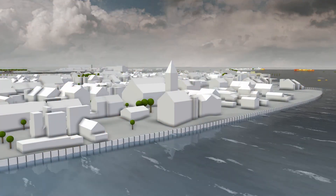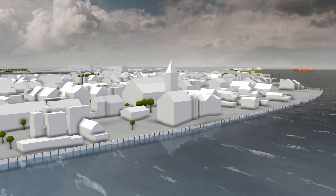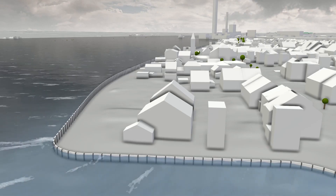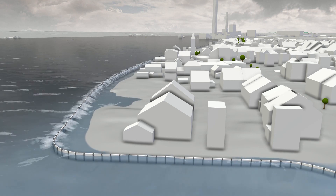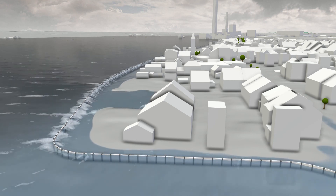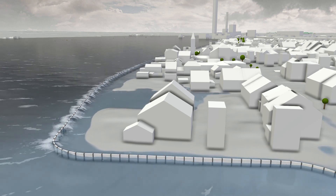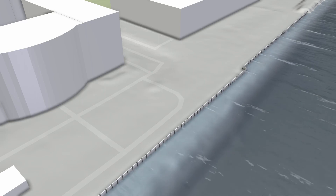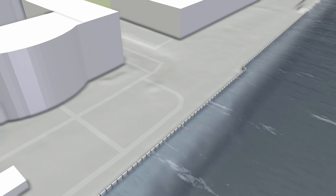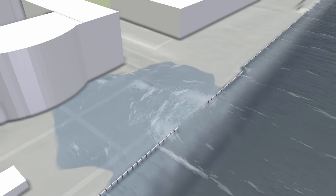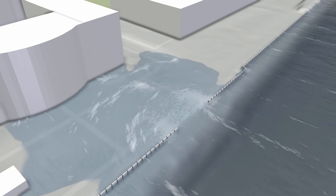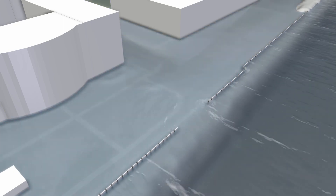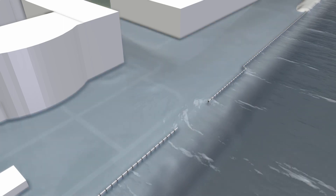Our visualization automatically highlights important aspects of the water flow, such as regions where water is overtopping a flood wall. It also shows the high velocity of water at a flood wall breach and indicates when the velocity decreases again.